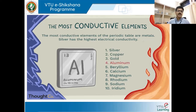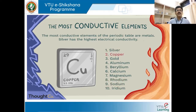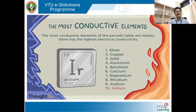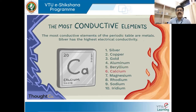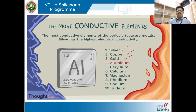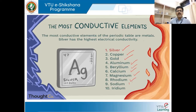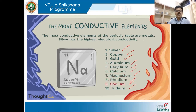Now let us start our topic. I am going to deal with the conductivity of metals, or in general conductivity of any elements. The first question that comes to mind is: what is a conductor? A material which allows electricity to pass through is what we call a conductor. Examples of the most conducting elements include silver, copper, gold, aluminium, beryllium, calcium, magnesium, rhodium, sodium, and iridium.